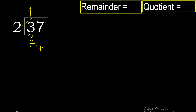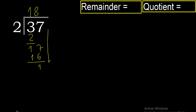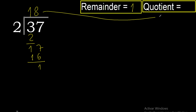2 multiplied by 9 is 18 — excessive. 2 multiplied by 8 is 16; 16 is the closest. 17 minus 16 is 1. There is no number that goes down, therefore finish. Remainder is 1. Quotient.